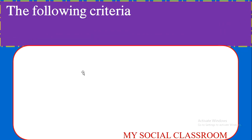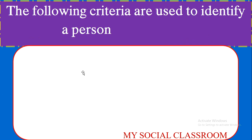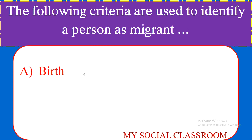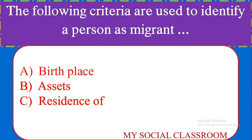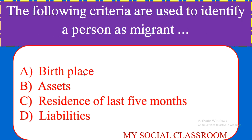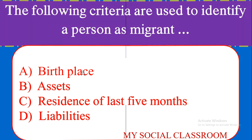The following criteria are used to identify a person as a migrant: Birthplace, Assets, Residence of last five months, Liabilities. Correct answer: Birthplace.